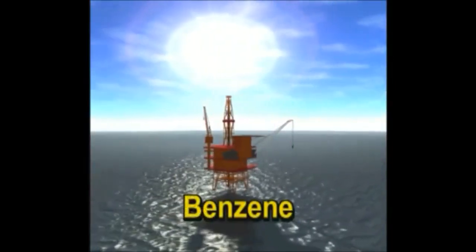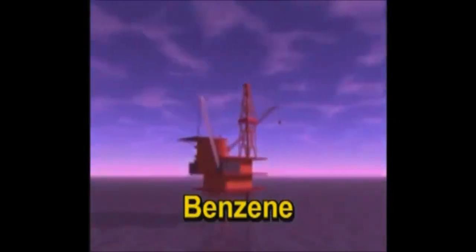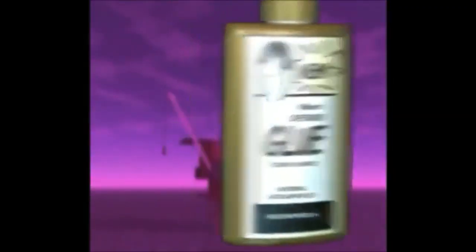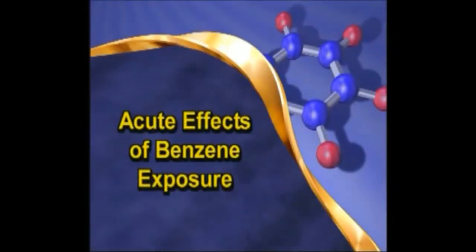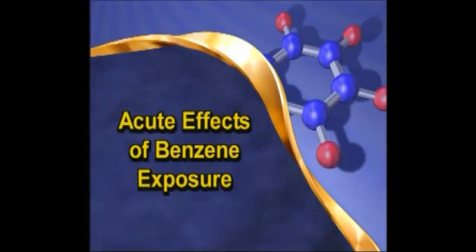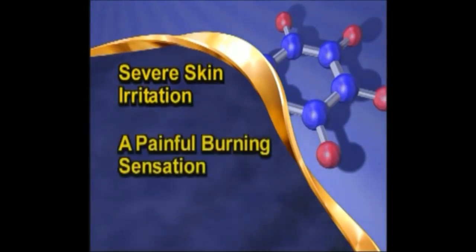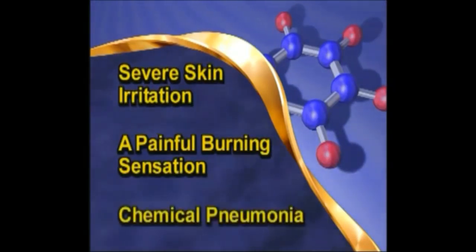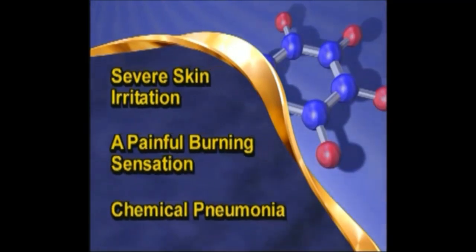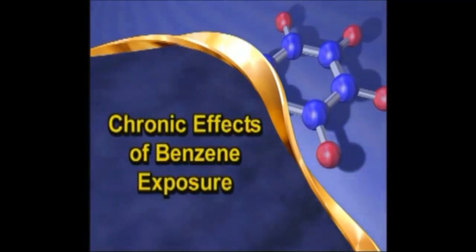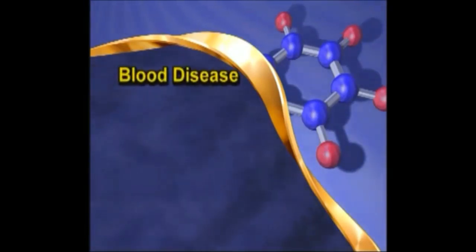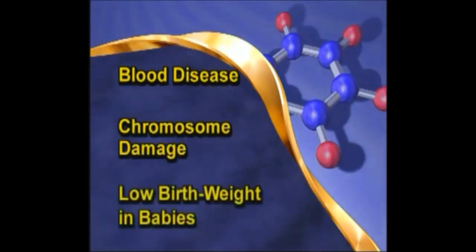Benzene, for example, occurs naturally in crude oil and natural gas, and is commonly used as a solvent or raw material in the manufacture of a number of products. The short-term or acute effects of benzene exposure include severe skin irritation, a painful burning sensation, and a condition known as chemical pneumonia, in which benzene is absorbed rapidly through the skin, causing your lungs to swell. Exposure to low concentrations of benzene over a long period of time can produce chronic effects including blood disease, chromosome damage, and low birth weight in babies.